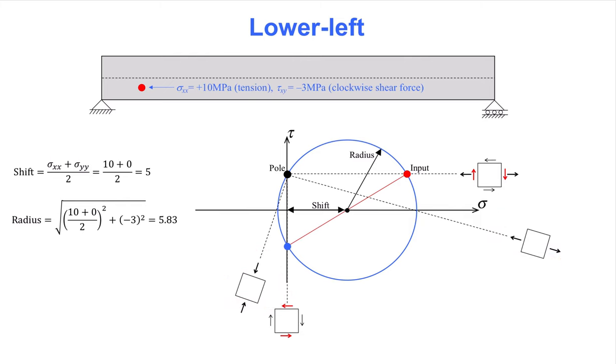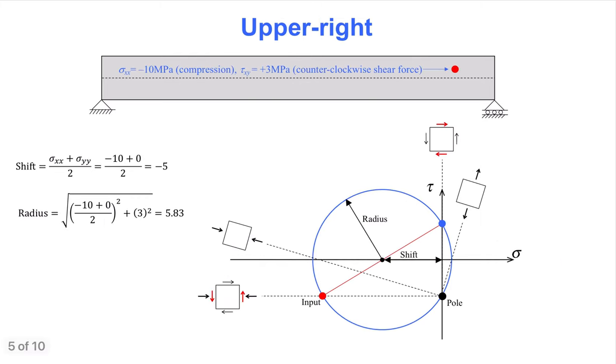The next slide examines the stress state in the upper right side of the beam. The axial stress sigma-xx is negative and the shear stress is positive. The positive shear stress is manifested in the small red arrows that appear here and here. The pole point and the principal stresses are also identified in this slide.